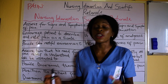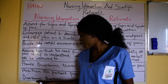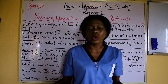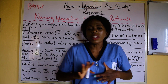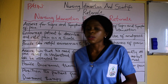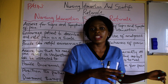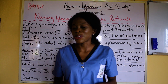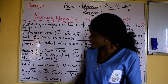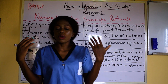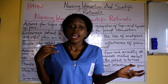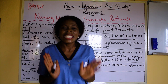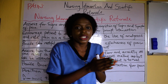Another nursing intervention for pain is to position the patient properly. For example, a patient that just left the theater — depending on the type of pain, that will determine the position to use, and the correct position will help reduce pain in the affected area. The last intervention is give prescribed analgesics — it could be paracetamol, morphine, or pentazocine, depending on the severity. That covers the nursing interventions and scientific rationale for pain.